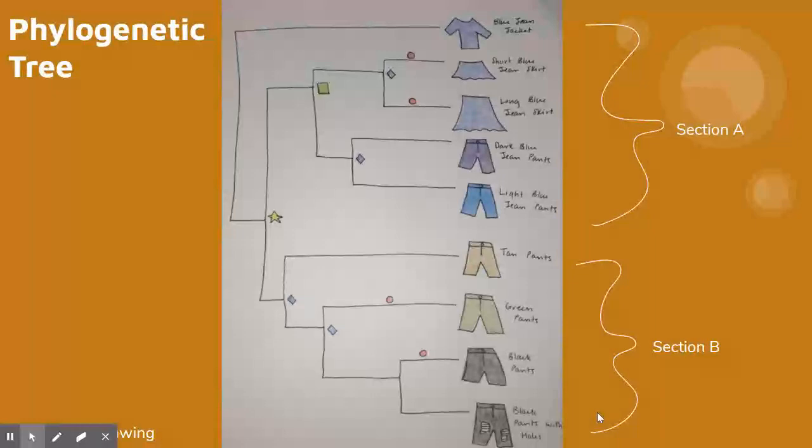The articles of clothing in Section B are grouped together because they are all colored pants. It is then broken down and separated by color. As an example, the black pants and the black pants with holes are more closely related to each other than they are to the green pants.